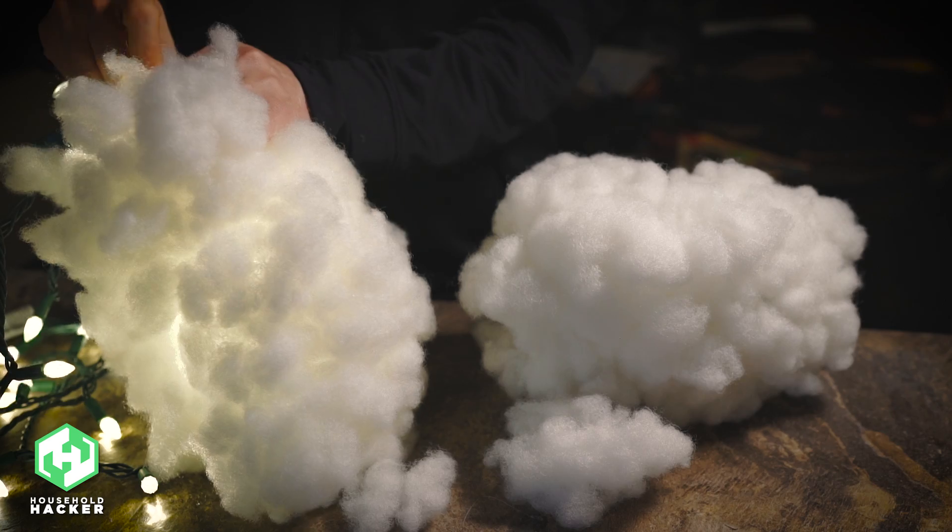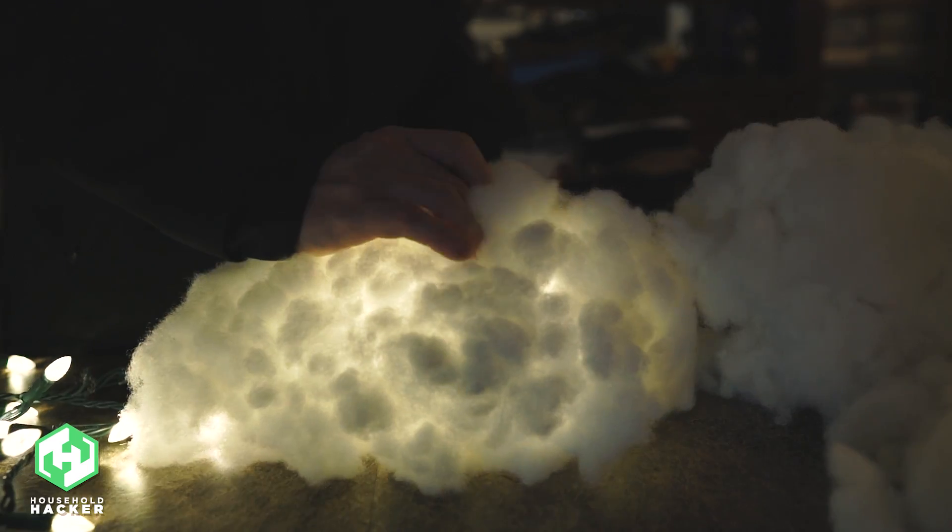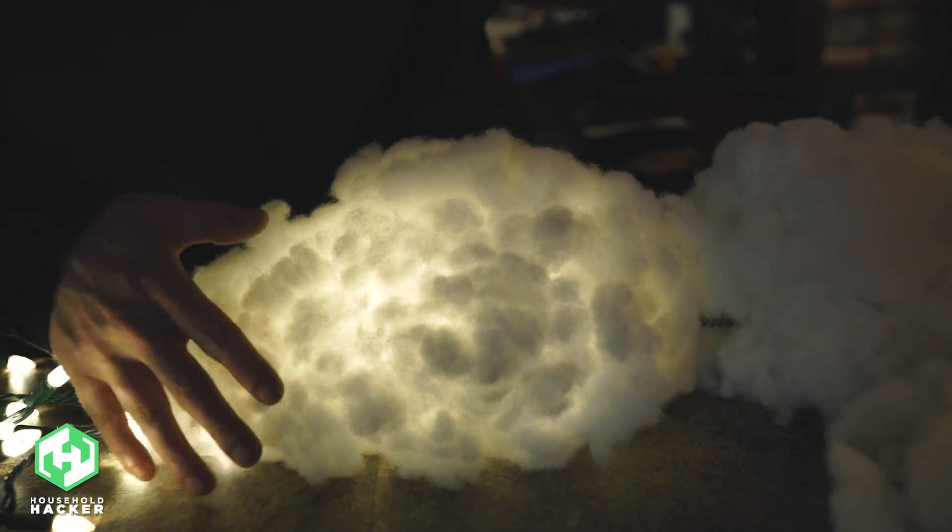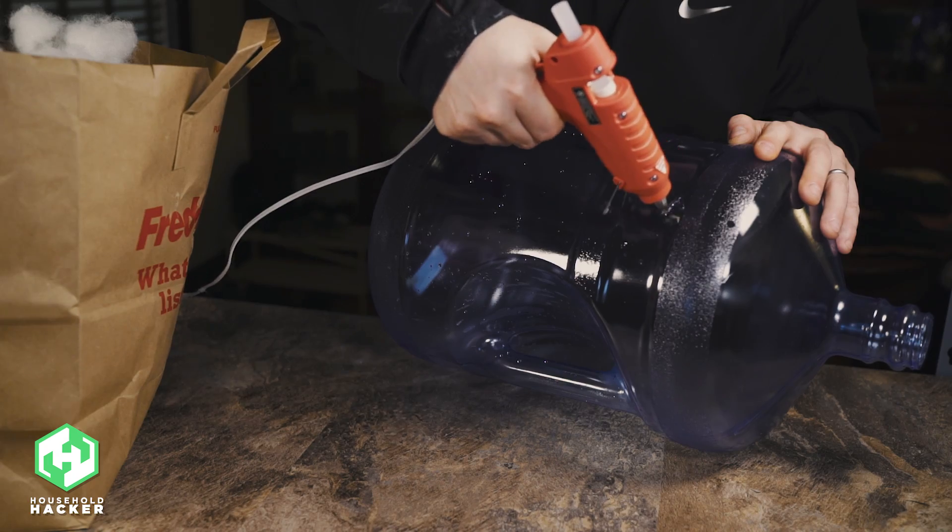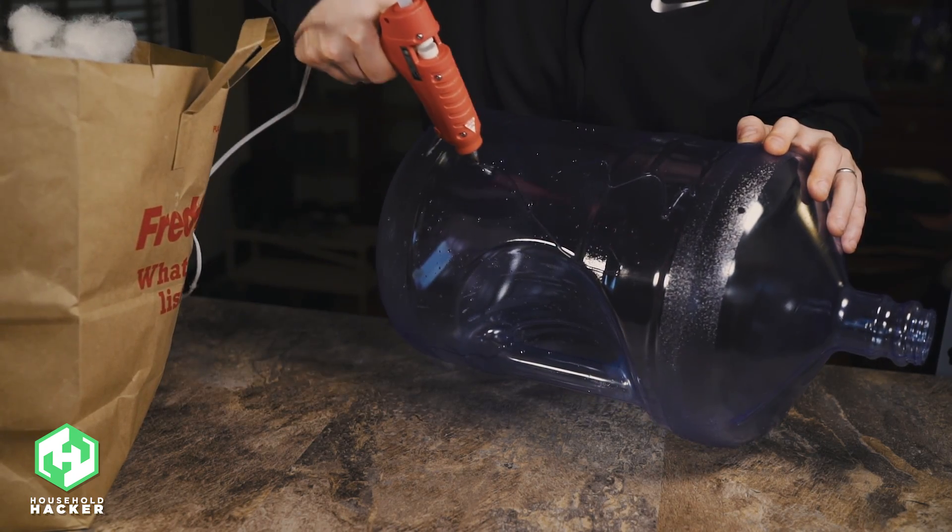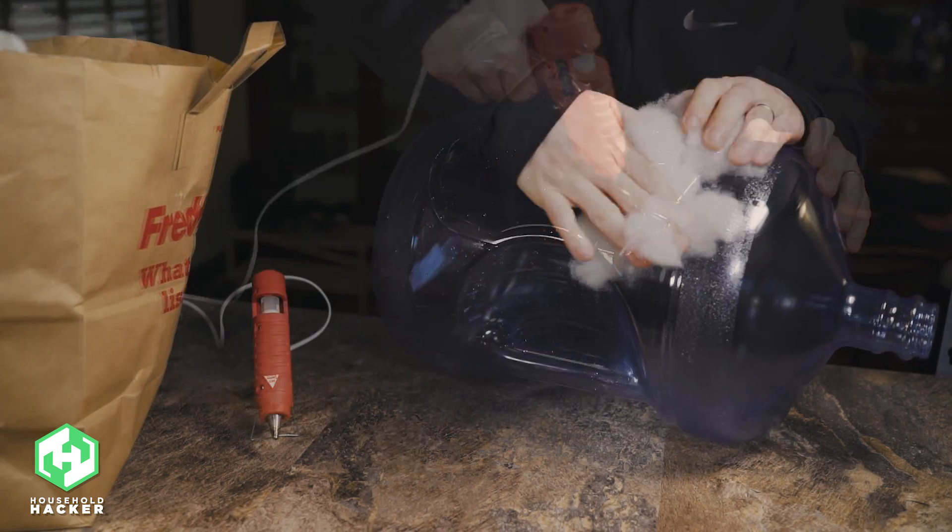Simply grab a color you like and stuff the string lights into the bottle. I suggest clear, blue, or purple to get a really interesting effect. After we had our two smaller clouds completed, we decided to up the ante with a five gallon water bottle.